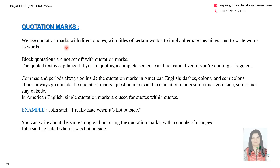Now, quotation marks. We use quotation marks with direct quotes or titles of certain works. For example, John said, 'I really hate when it's hot outside.' However, in formal writing we do not encourage direct speech; you can rephrase it: 'John said he hated when it was hot outside.' When you write in quotation marks, you are quoting words that were spoken exactly as they were said.